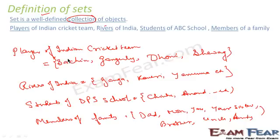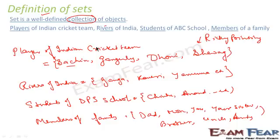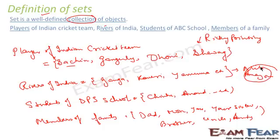Now let me look at the cricket team set again. I have members like Sachin, Ganguly, Dhoni. So this is the set of the Indian cricket team. Ricky Ponting, for example, will not belong to this set because Ricky Ponting is not part of the Indian cricket team. But players like Sachin, Ganguly, Dhoni, Sehwag, Gambhir — these will all belong to the cricket team of India. Similarly, if you say river Nile or river Amazon, these are famous rivers not in India, so they will not be part of the set of rivers of India.